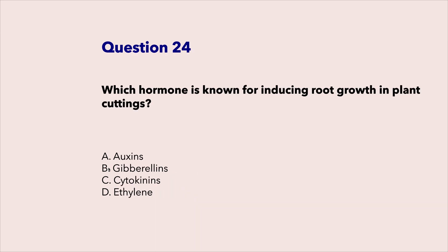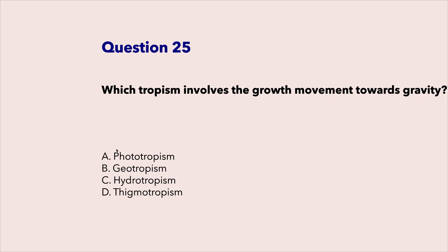Which hormone is known for inducing root growth in plant cuttings? Auxins. Which tropism involves the growth movement towards gravity? Geotropism.